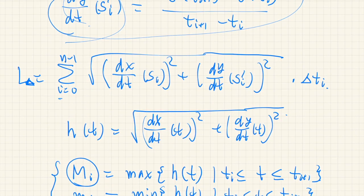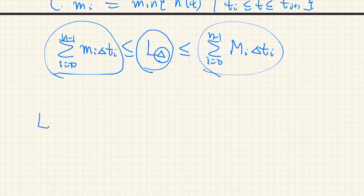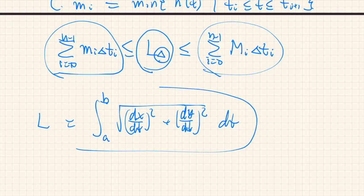When we look at this expression, the summation becomes an integral and Δt becomes dt. The length of the curve is therefore given by the integral from a to b of the square root of (dx/dt)² + (dy/dt)² dt. This formula applies whenever the curve is defined by a pair of parametric functions.